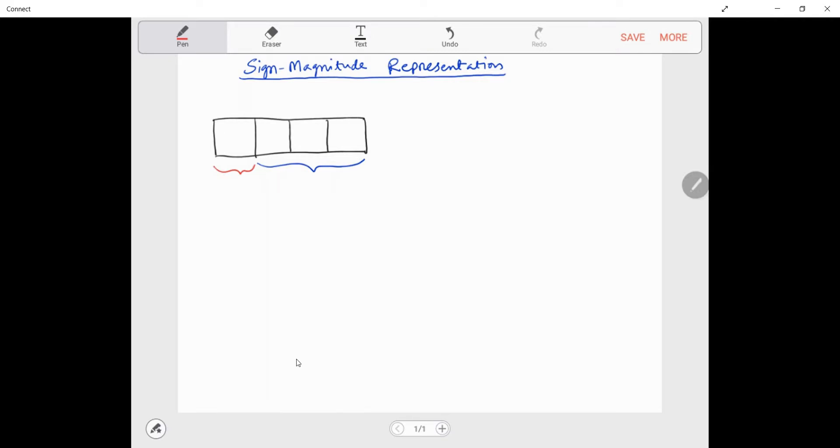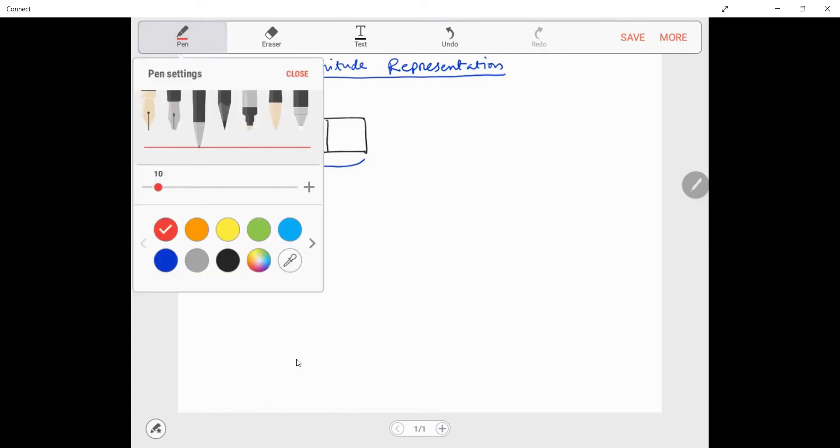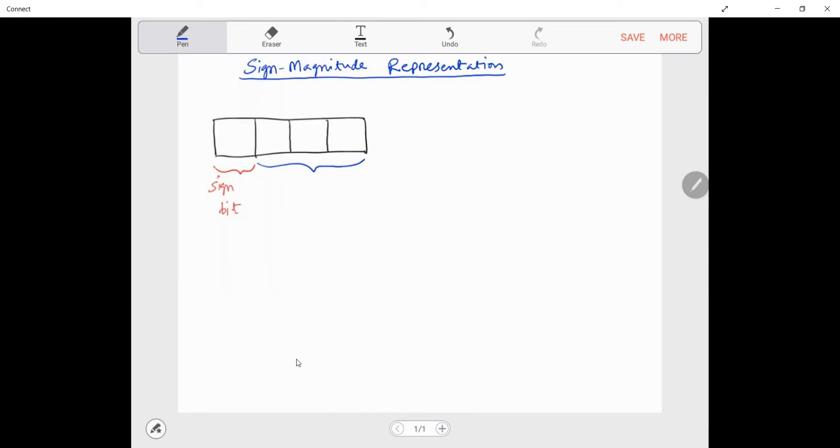Let's talk about sign magnitude representation. In this notation, the leftmost bit, which is also the most significant bit, is used to indicate the sign. So this is the sign bit. All the rest of the bits are used for magnitude.